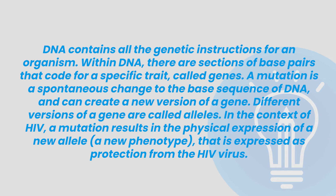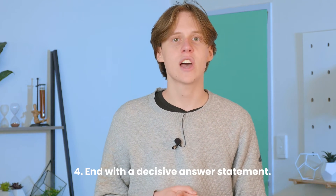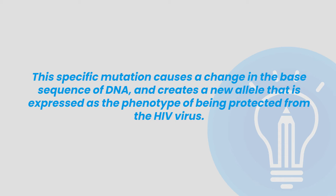DNA contains all the genetic instructions for an organism. Within DNA there are sections of base pairs that code for a specific trait, called genes. A mutation is a spontaneous change to the base sequence of DNA and can create a new version of a gene. Different versions of a gene are called alleles. In the context of HIV, a mutation results in the physical expression of a new allele — a new phenotype — that is expressed as protection from the HIV virus. Our final step was to end with a decisive answer statement: 'This specific mutation causes a change in the base sequence of the DNA and creates a new allele that is expressed as the phenotype of being protected from the HIV virus.'